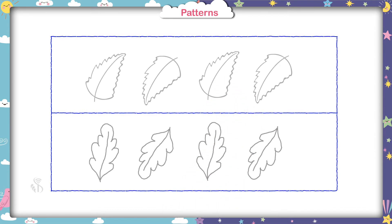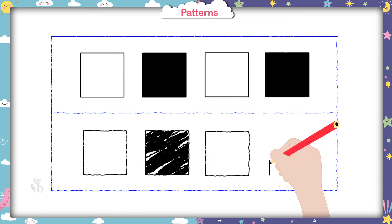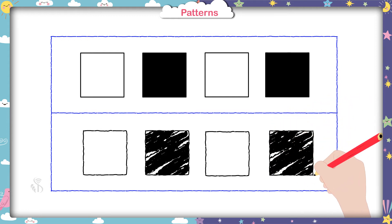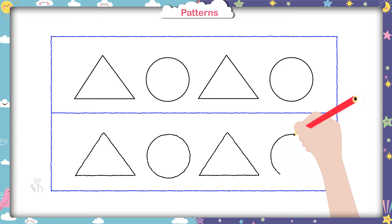Very good. The next picture comprises four squares. The first square is blank, whereas the second square is colored. Now you have to draw the squares in the same manner. Nice. Look at this picture now. Here we can see a triangle followed by a circle. You have to draw them in the same order.